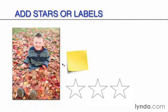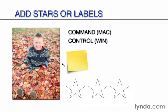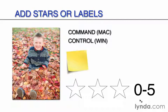We all know about stars and labels, but I want to dig a little deeper into how we can work with them. In particular, I want to talk about some shortcuts. If we want to add stars, we can press Command on a Mac or Control on Windows, and then press the number keys between 0 and 5. Pressing 0 will remove the star rating; 1 through 5 will add that particular star rating. In this way, we can use this shortcut to quickly evaluate our photographs.